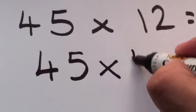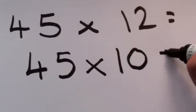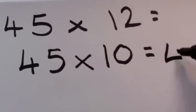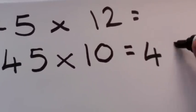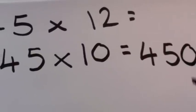45 times 10, essentially all you're doing is adding a zero to your original number, making it 450. So pretty straightforward, alright?